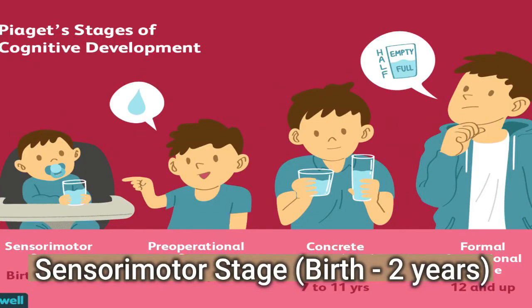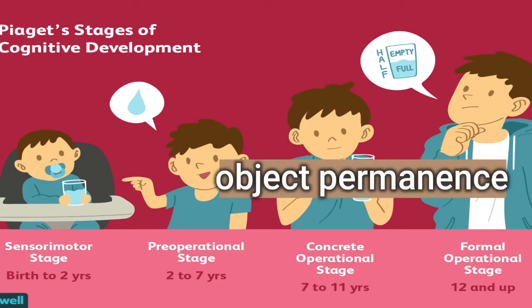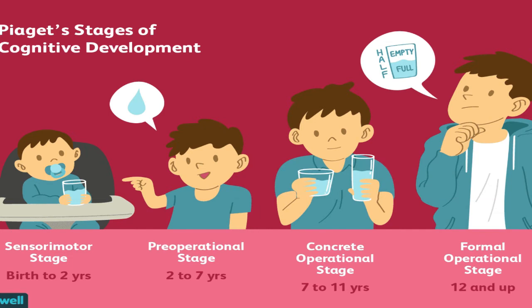Sensorimotor Stage (Birth to Two Years): The main achievement during this stage is object permanence — knowing that an object still exists even if it is hidden. It requires the ability to form a mental representation of the object.